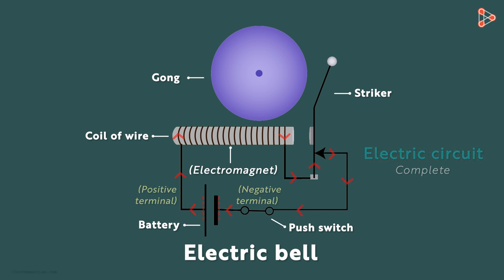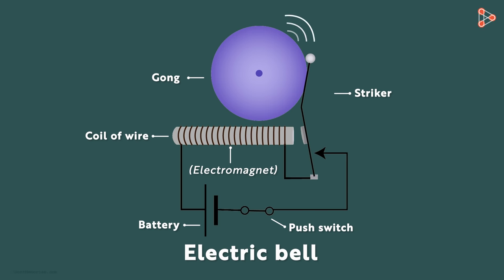But when the current flows through the coil, it becomes an electromagnet. This electromagnet then attracts this soft iron towards it. And in the process, the striker strikes the gong and the sound is produced.